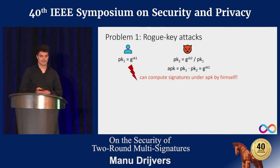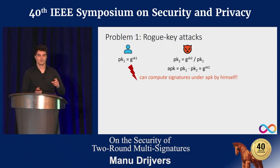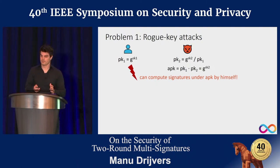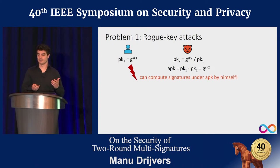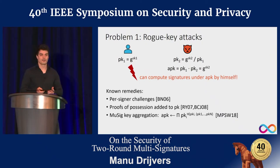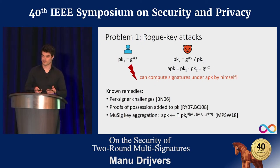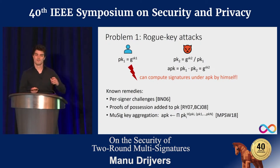Unfortunately there are issues. The first is called the rogue key attack: an adversary can choose a public key as g to some value divided by the honest user's public key. Since the aggregate key is the product of individual keys, this cancels out the honest user's key, letting the adversary compute signatures by itself even in that user's name. This attack is well-known and we have many mitigations: using different c values per signer, requiring proof of knowledge of the secret key, or a more complex key aggregation that raises each key to a different exponent.